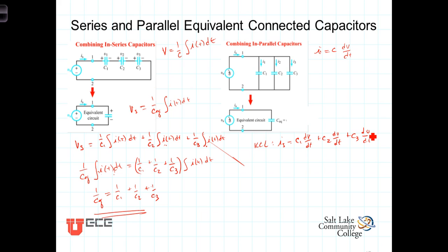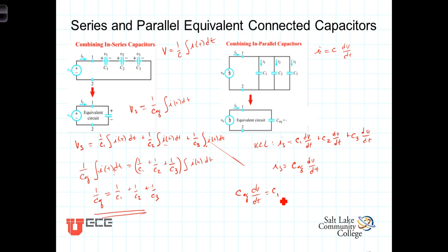For the equivalent circuit, the current through the equivalent capacitor is I sub S, which will be CEQ times dv/dt. We'll equate these two expressions for I sub S, and we get that CEQ dv/dt is equal to C1 plus C2 plus C3 times dv/dt, factoring out the common dv/dt term. Because the voltage is the same in both circuits, we can cancel those terms, and we're left with the equivalent capacitance of these parallel capacitors: CEQ is equal to C1 plus C2 plus C3.